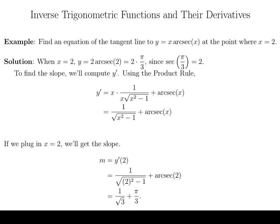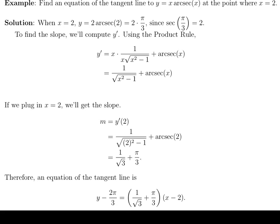Well, we've got a slope, we've got a point, and we can put everything together now to get our equation of the tangent line. So an equation of the tangent line is y minus 2 pi over 3 is equal to our slope, 1 over root 3 plus pi over 3, that whole thing times x minus 2.